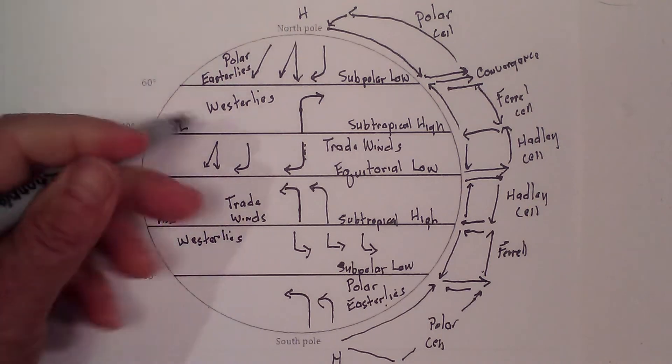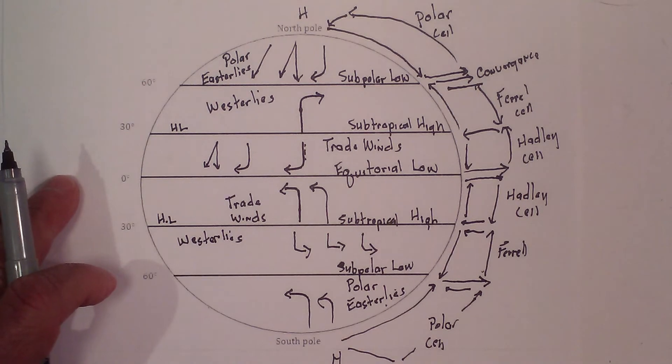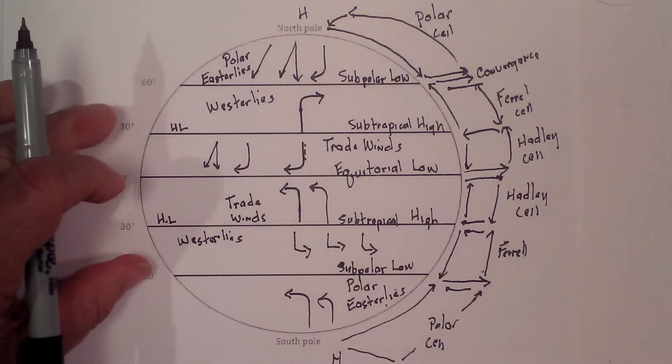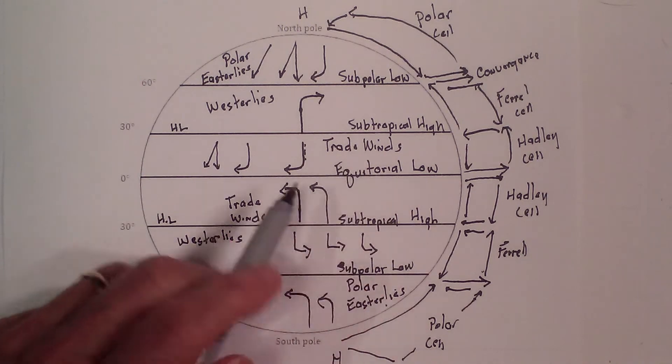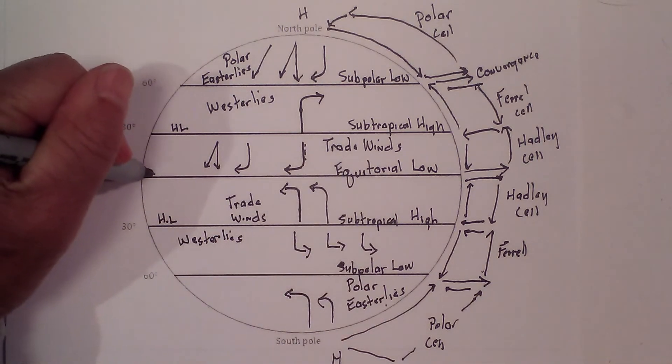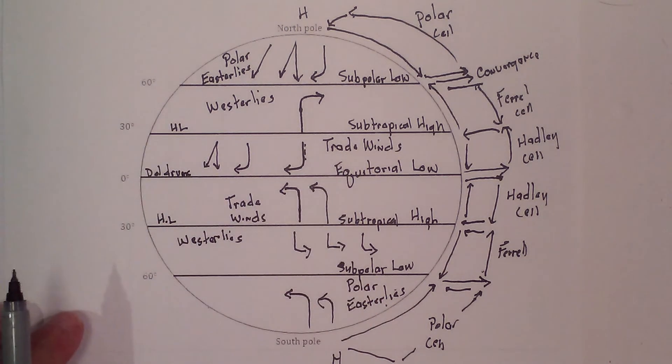Because as the wind is going upward, it creates an area where sometimes there's very little wind. And then this equatorial low is sometimes called the doldrums. Because there's very little wind there. Because it's moving upward.